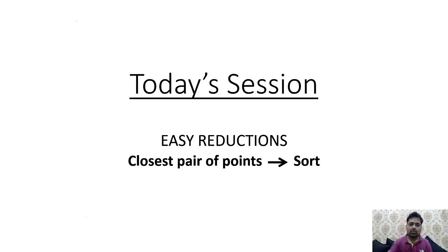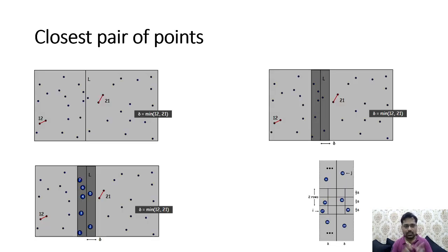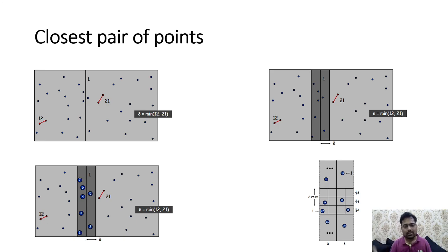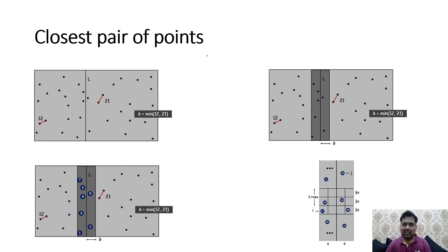Before that we should know what is closest pair of points. The problem will have a certain design approach — we are finding out solutions using a certain designing approach. The closest pair of points is solved using divide and conquer, so we should know what it is and why it is needed.